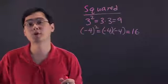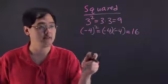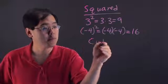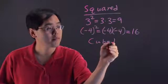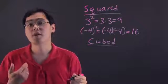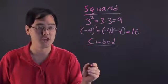So with squaring, you're multiplying by itself two times. Now when it comes to cubed, that simply means you're multiplying by itself three times, in terms of whatever number that you're given.